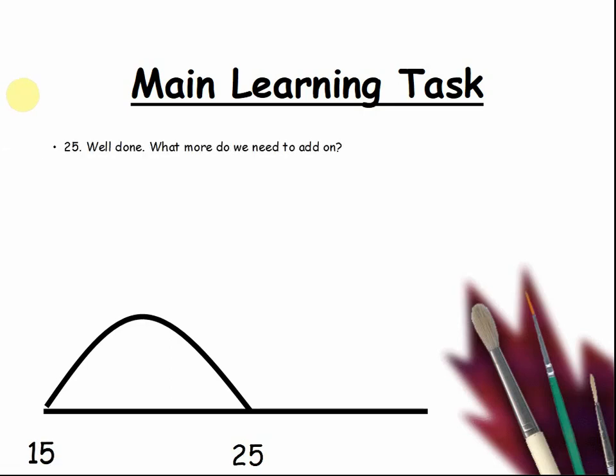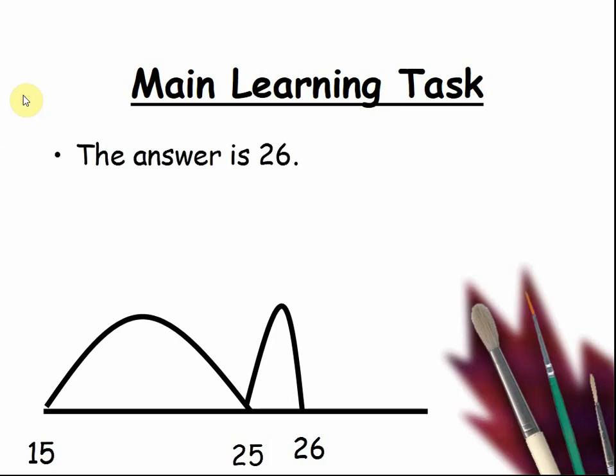What do we now need to add on? 15 add 10. But we are adding 15 add 11. We need to add another 1. Well done. So what do we land on? We land on 26. Well done. The answer is 26 because we jump 10 plus 1. We add 11.